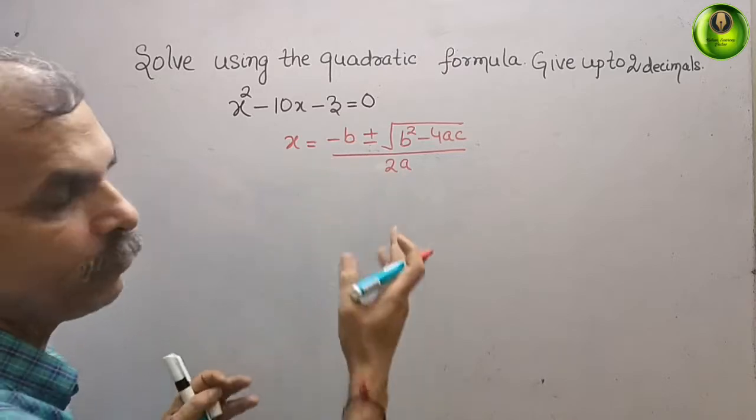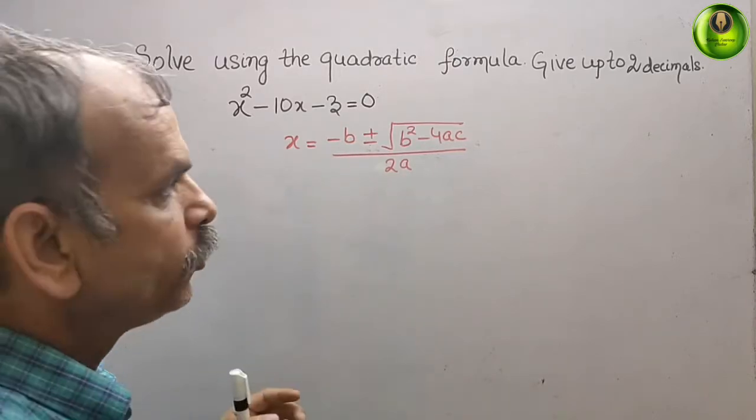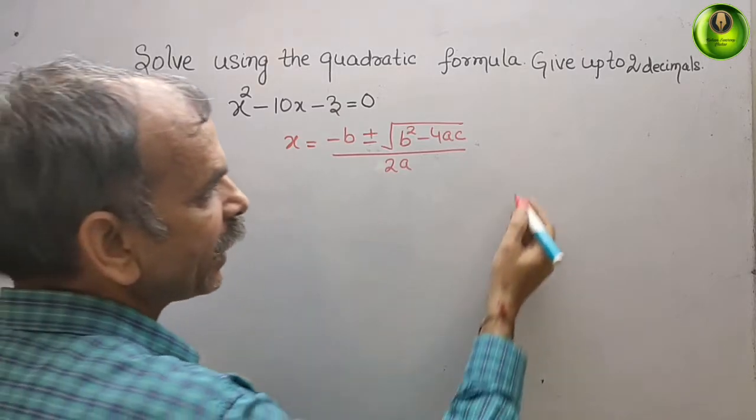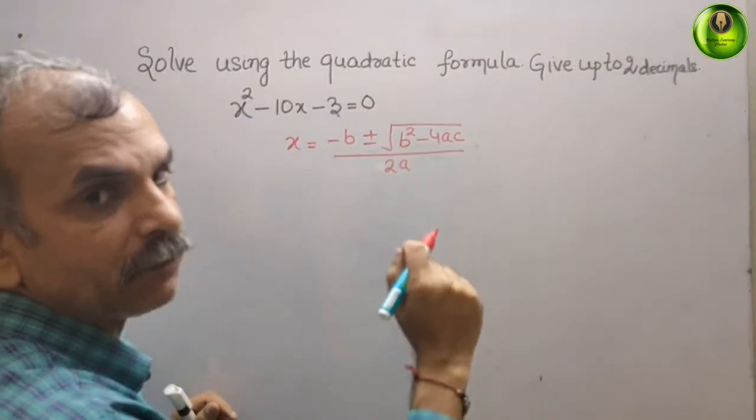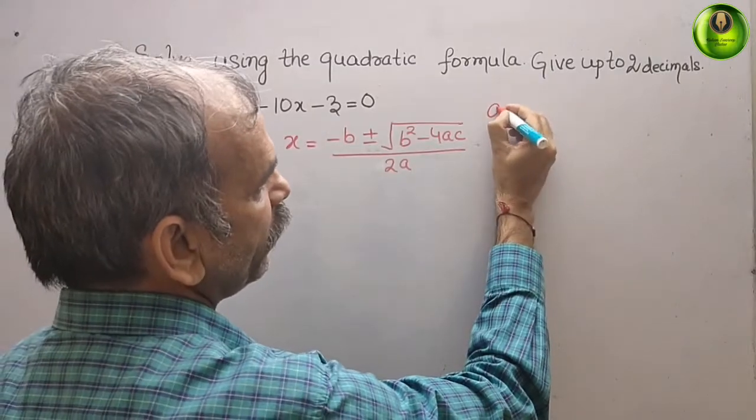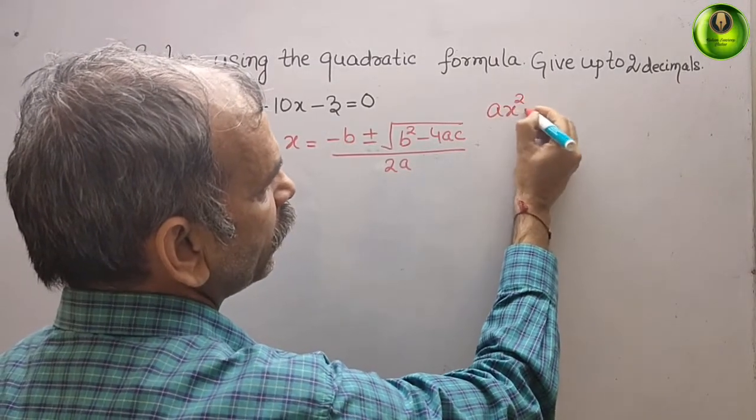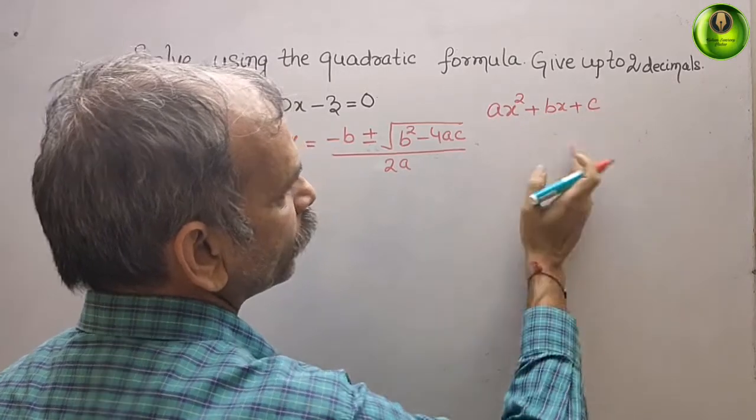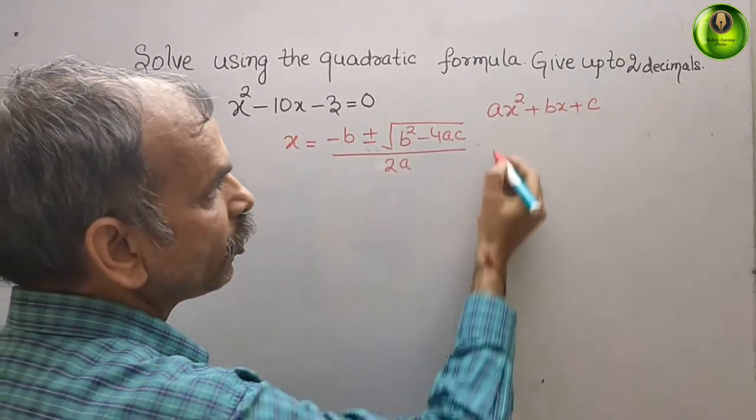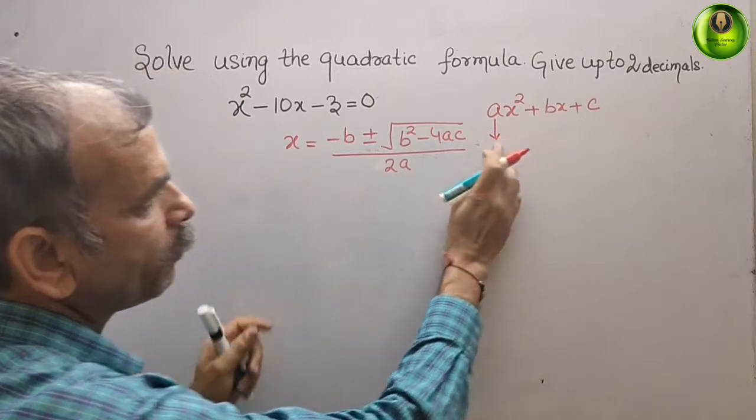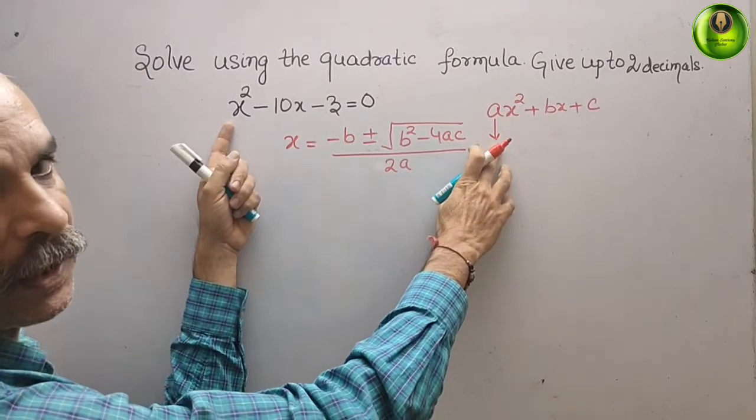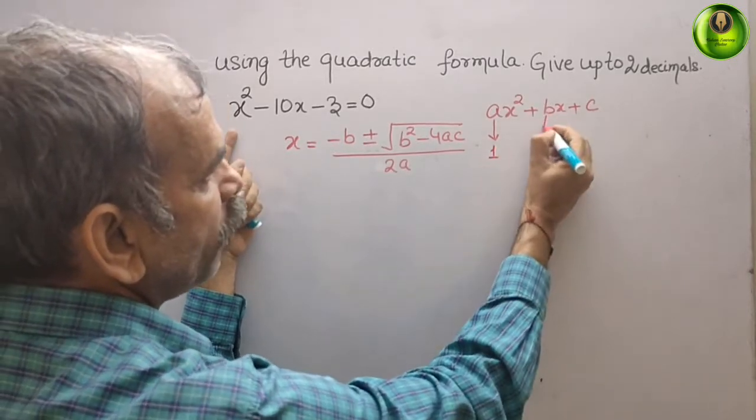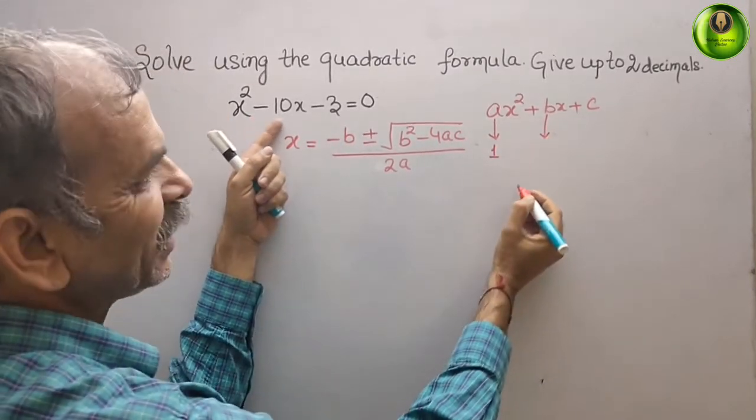Now we will find out the value of a, b, and c. The standard form of a quadratic equation is ax² + bx + c. Comparing it: the coefficient of x² is 1, so a = 1, b = -10, and c = -3.